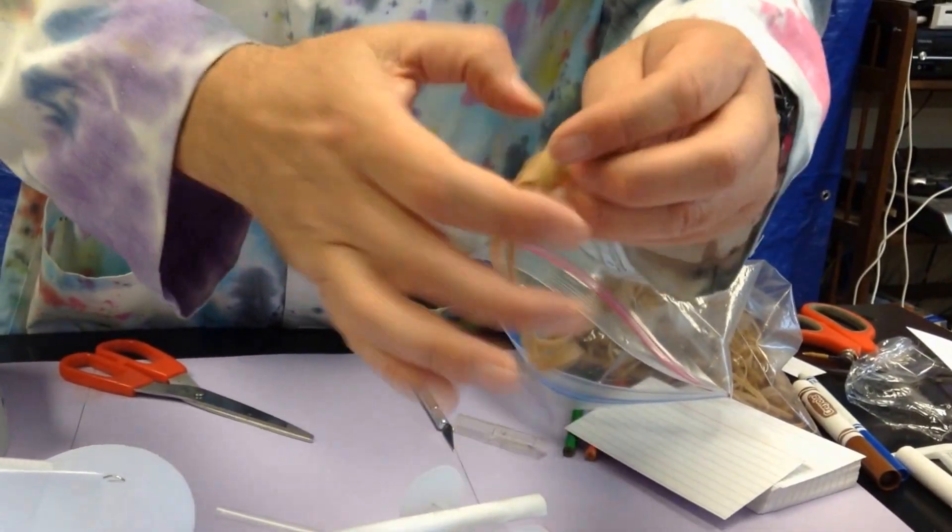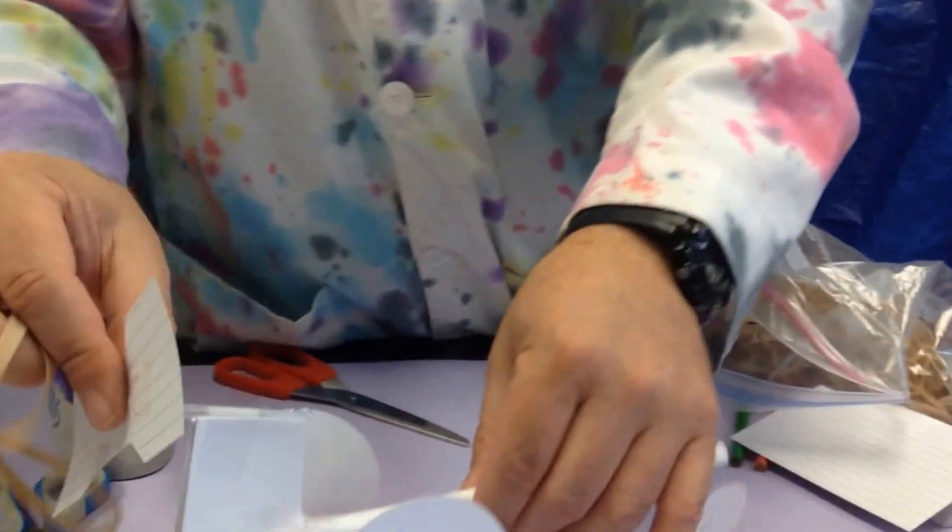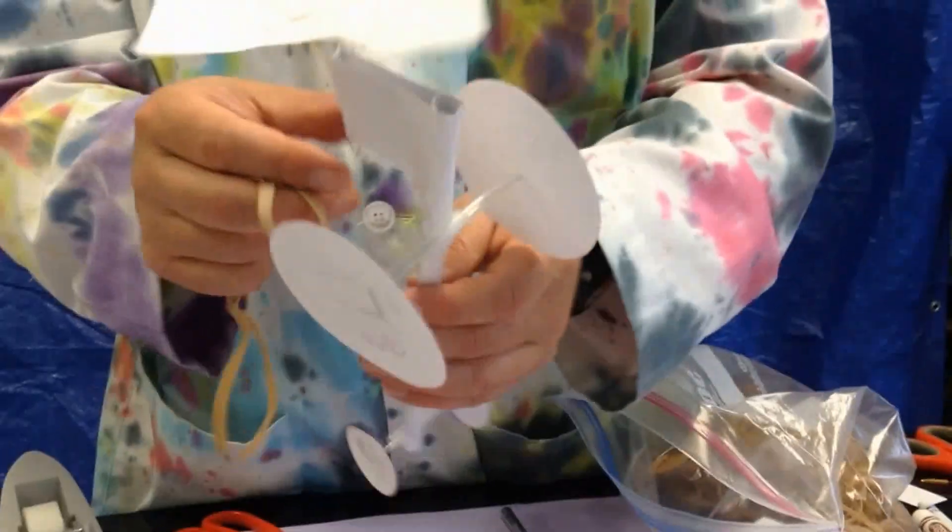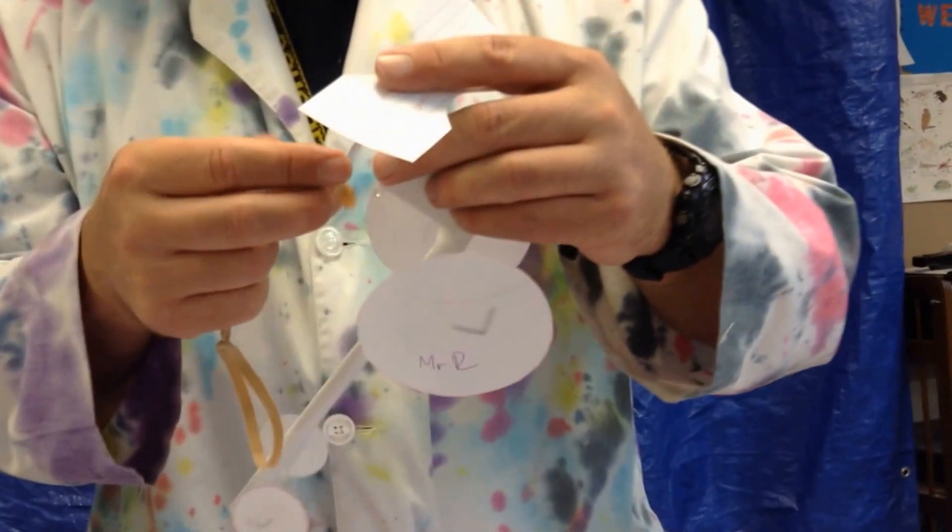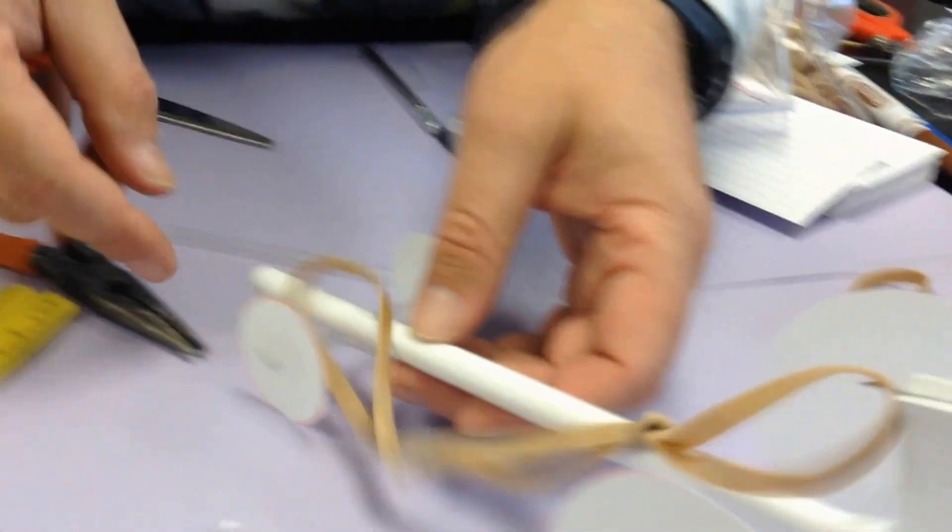This is where it really makes a difference - different rubber bands, different propellers. That's why the propeller is built to slide out, so you can change it. You should make several propellers. That's going to go on like this.